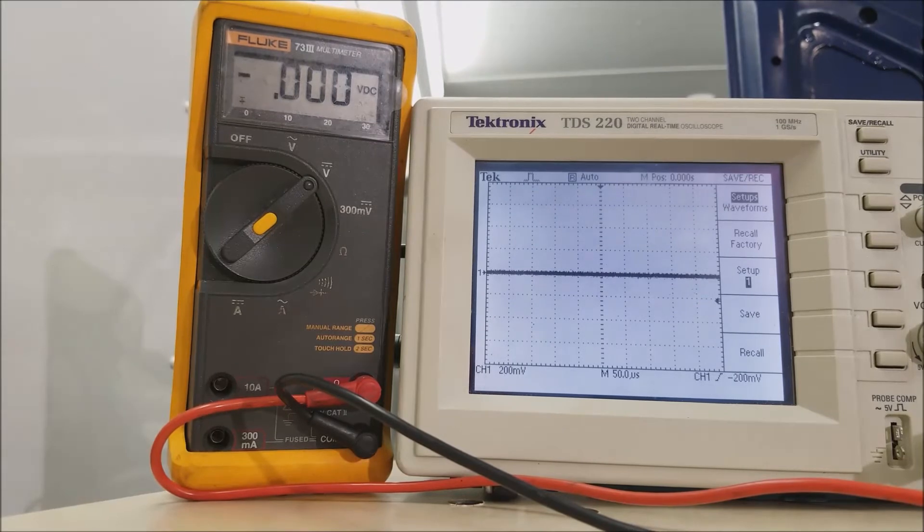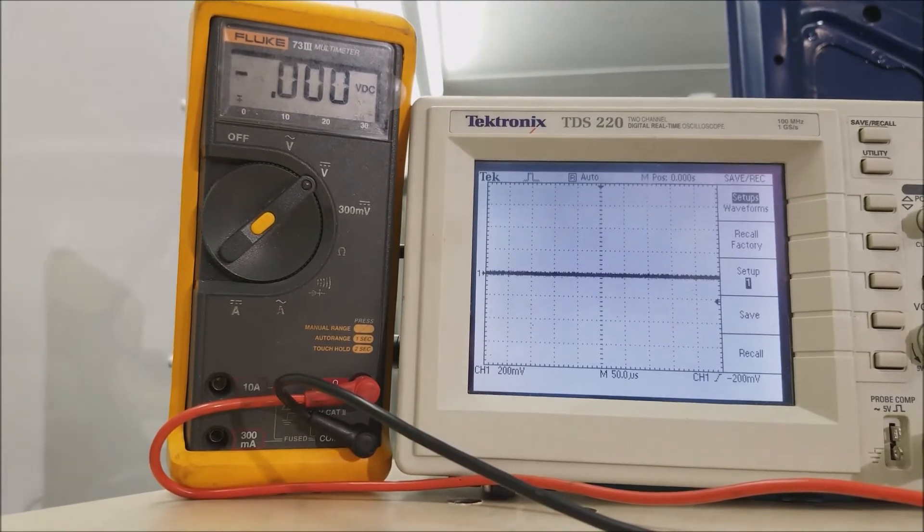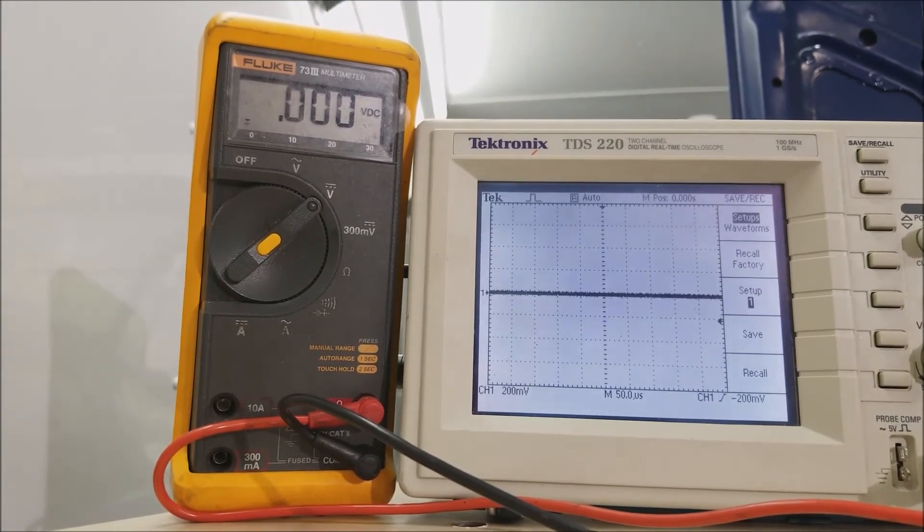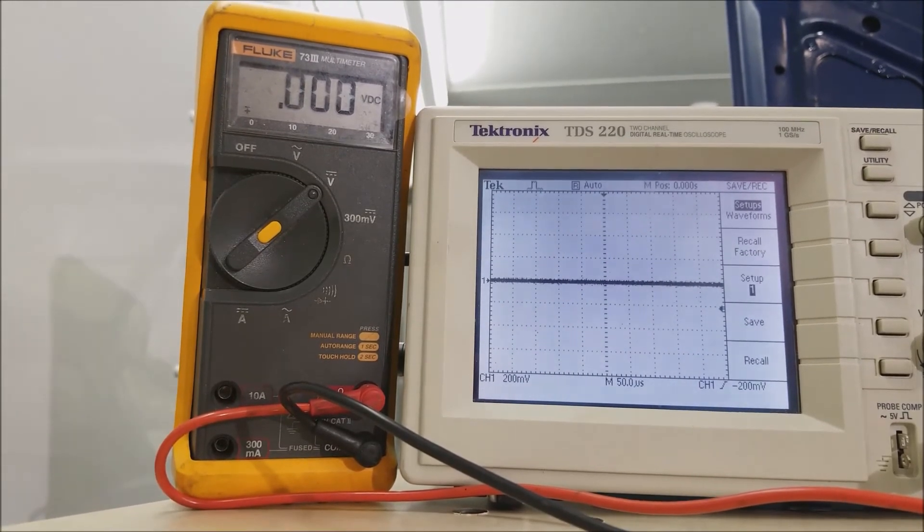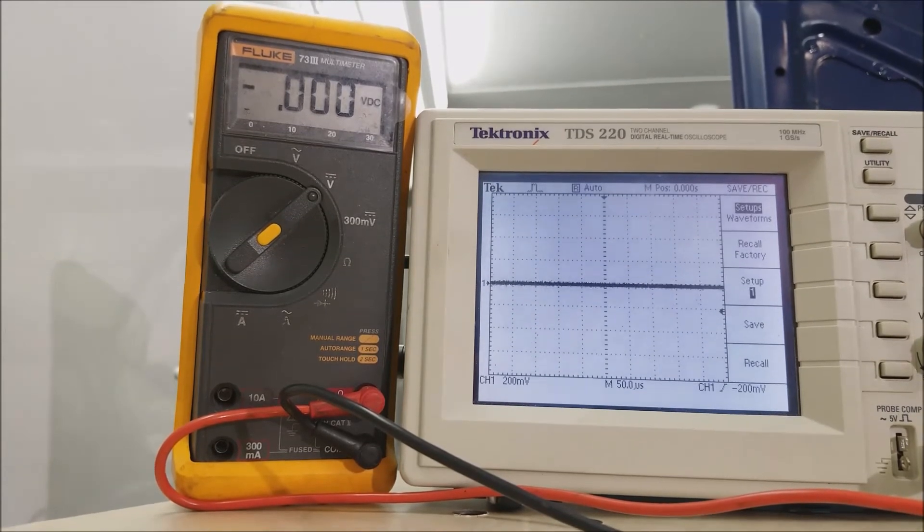I'm now going to do the same ground loss test, but I'm jumpered to the point on the chassis where the motor is grounded. This happens to be the same ground the ECU is using.